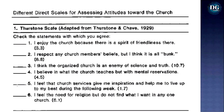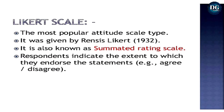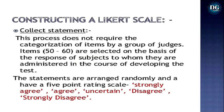The second scale is the Likert Scale — the most popular and widely used attitude scale. It was developed by Rensis Likert in 1932 and is also known as a summated rating scale. Respondents indicate the extent to which they endorse statements — agree or disagree. Construction begins with collection of statements; this process does not require categorization by judges. Items (50 to 60) are selected, arranged randomly, and rated on a five-point scale: strongly agree, agree, uncertain, disagree, strongly disagree.